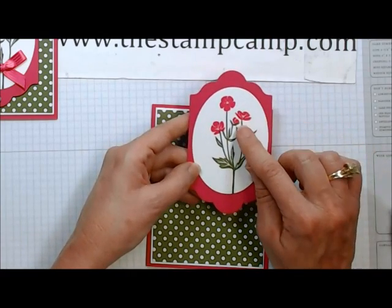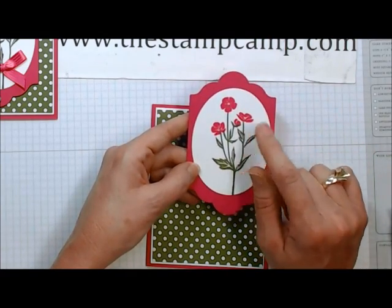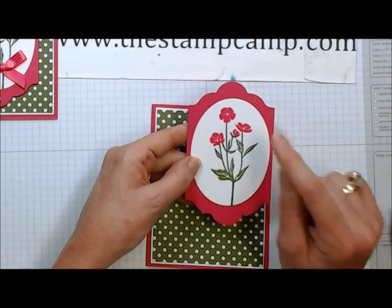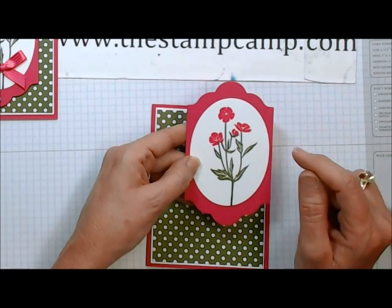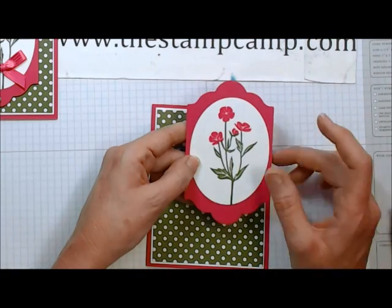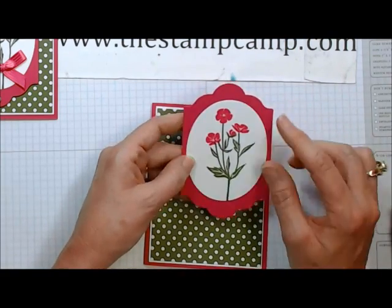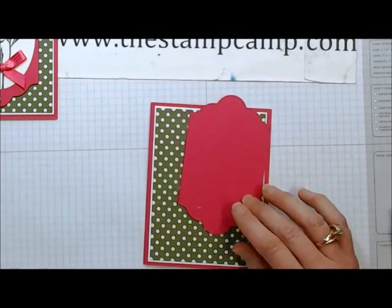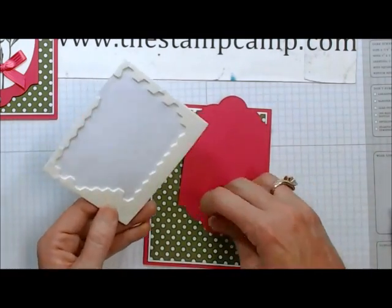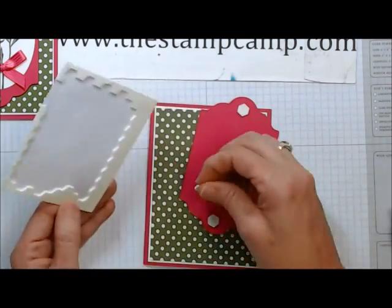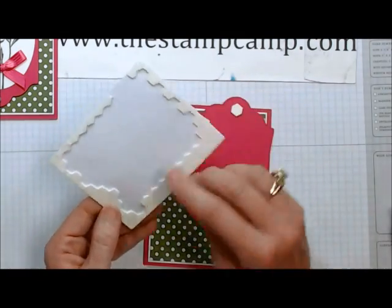I've already pre-stamped and cut out with the oval framelit. This is the field of wild about flowers stamp set and that's melon mambo and mossy meadow. And then I also cut out a lots of labels framelit and mounted those together. So now I'm going to just take some dimensionals and pop this up.